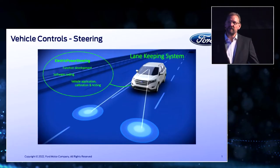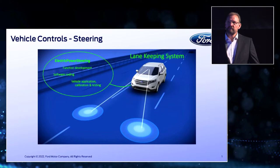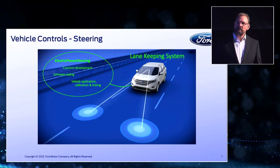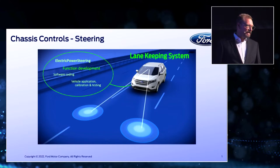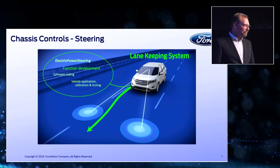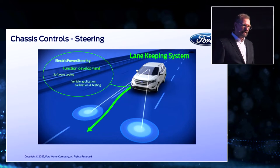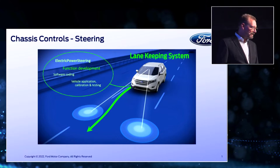Next to those two parts, as we know the features best, we are also responsible for vehicle application, calibration and testing. The task of a lane keeping system is, in case you detect an unintended lane departure, to really smoothly and gently steer back into your lane and align the vehicle in parallel to the driving lane.